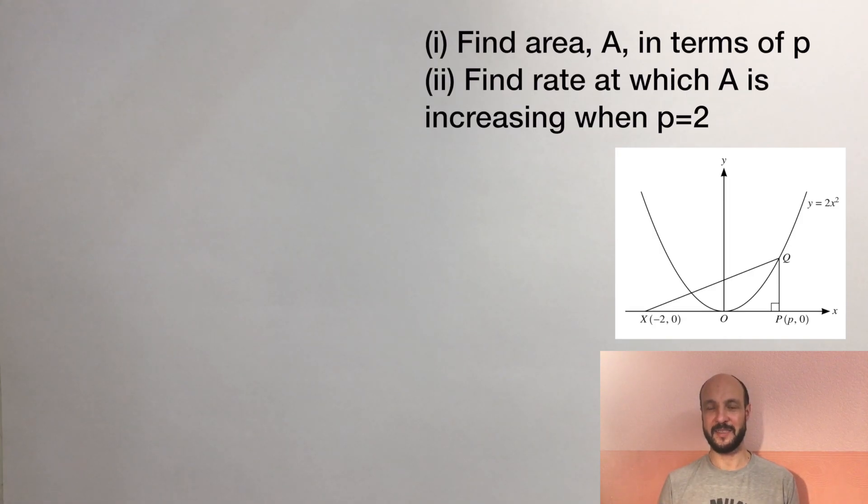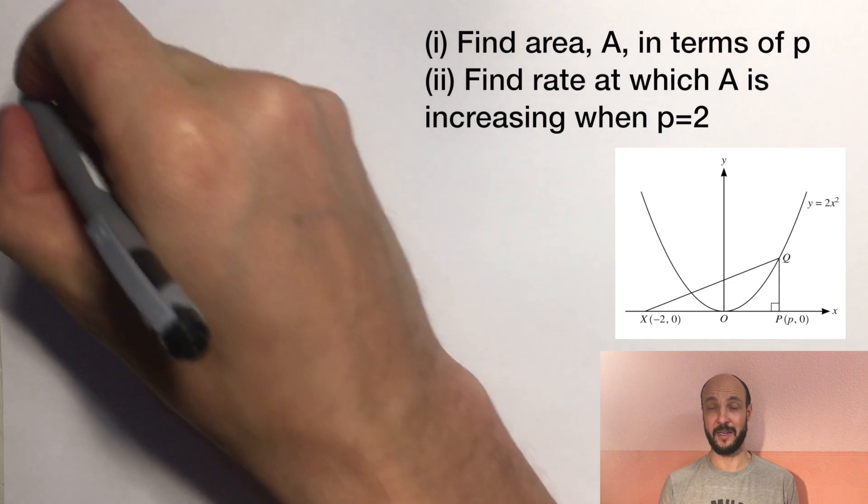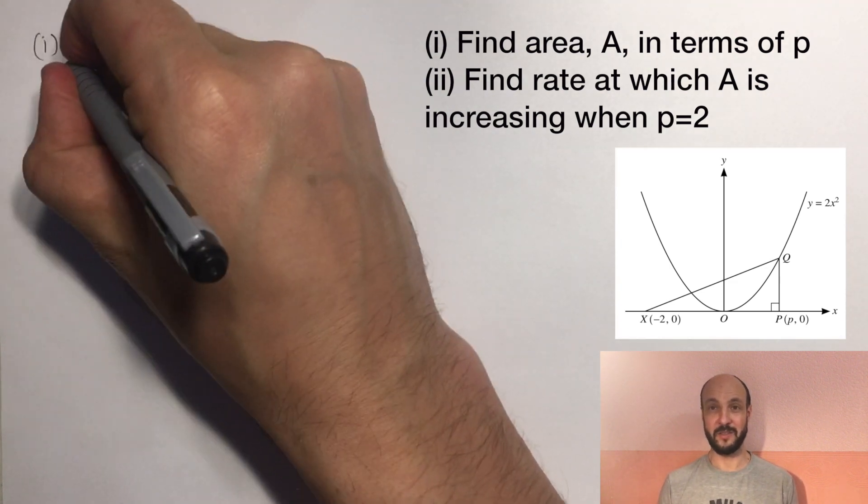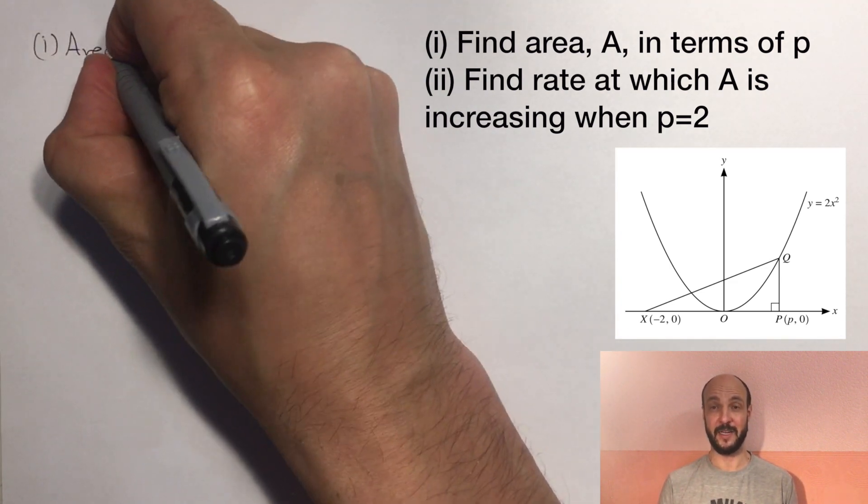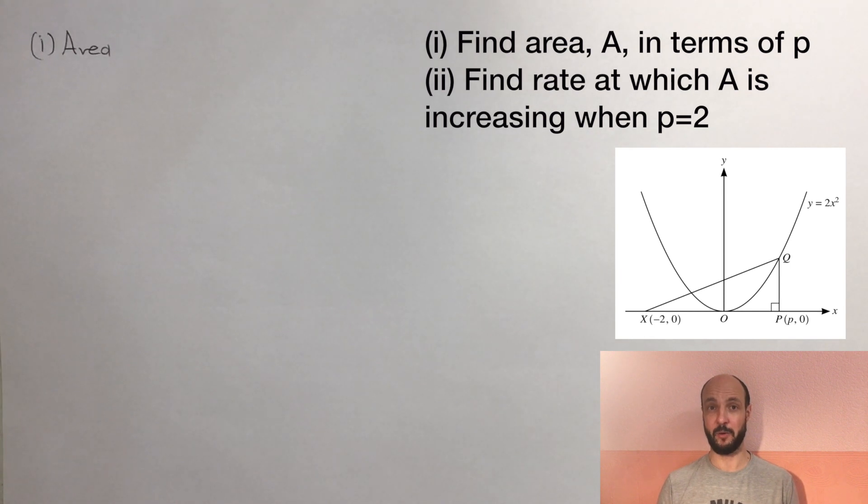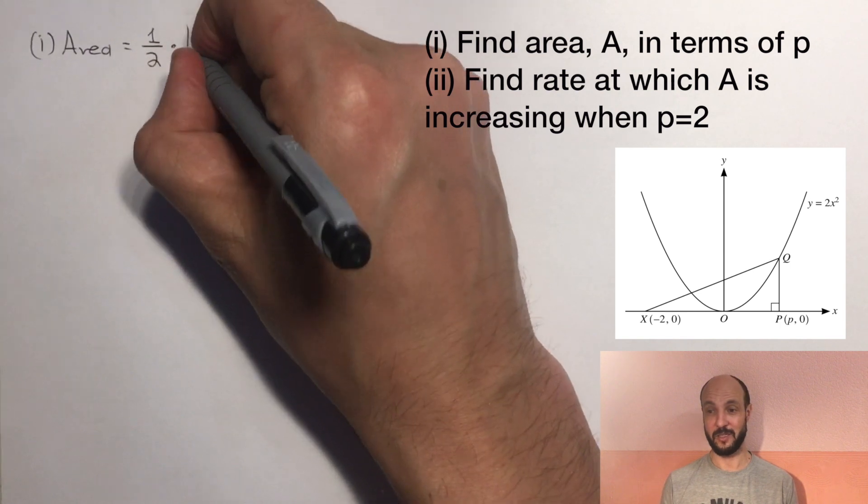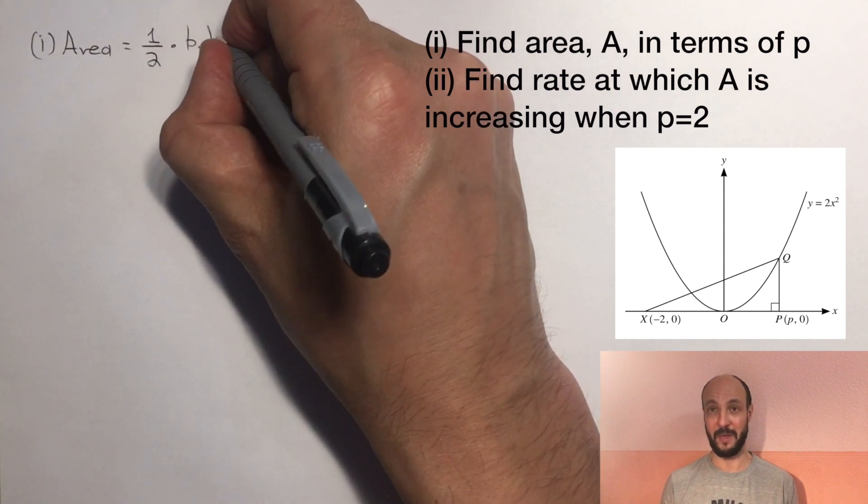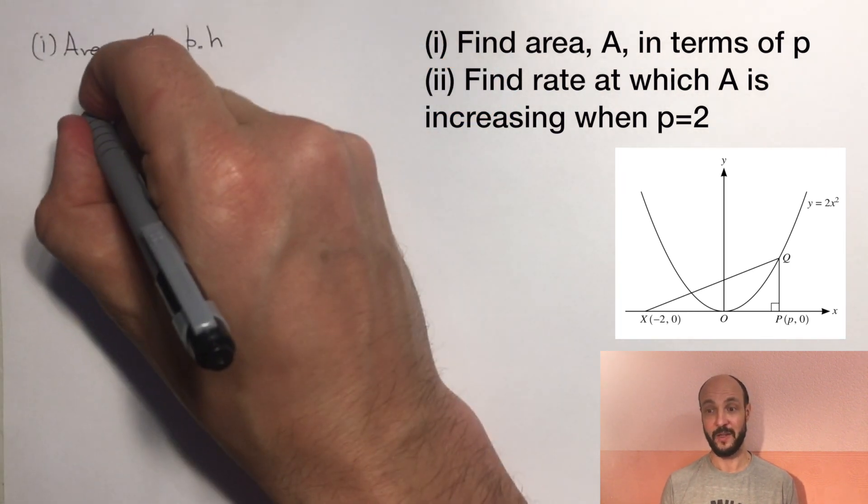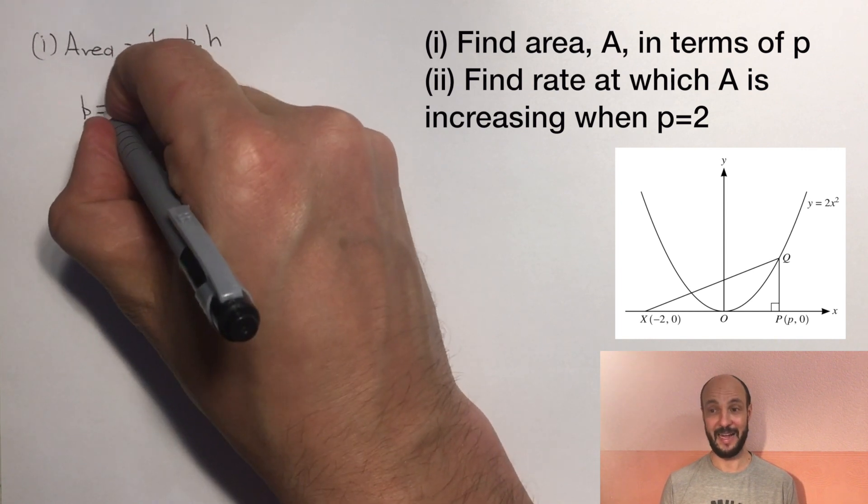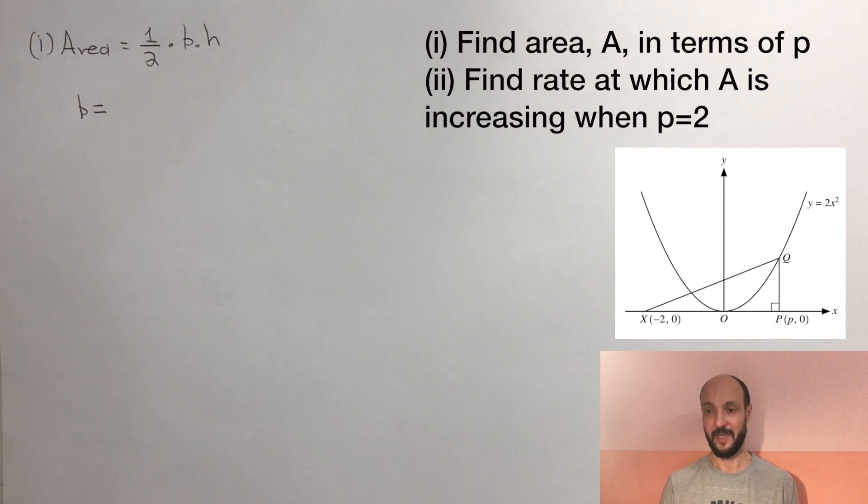Okay, so the question is asking us to find the area of the triangle. Most of the time when we're asked to find the area of a triangle, the first and most basic formula we're going to use is half of the base times the height. So we're going to look at the diagram and see if there's a base and height that we can determine in terms of p.